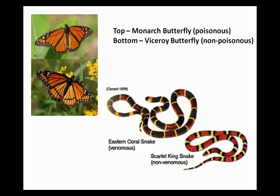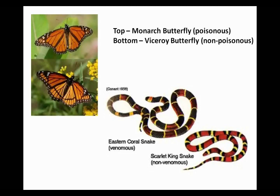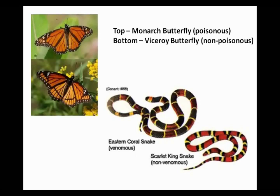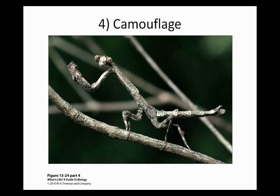Similarly, the eastern coral snake is highly venomous and the scarlet king snake is non-venomous, but they look very similar to one another. If you're going to eat one of those snakes, you're probably not going to take the time to figure out whether it's the venomous or non-venomous one — you're just better off not eating it. And here we have camouflage — if you're a bird, you're not very likely going to be able to see this critter.